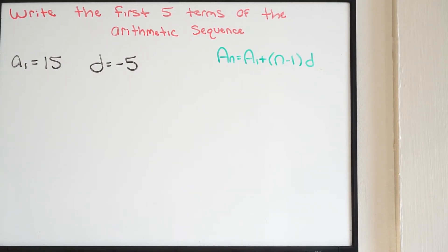So we can see here that we're provided with our first term, which is A of 1, and we're also provided the common difference.